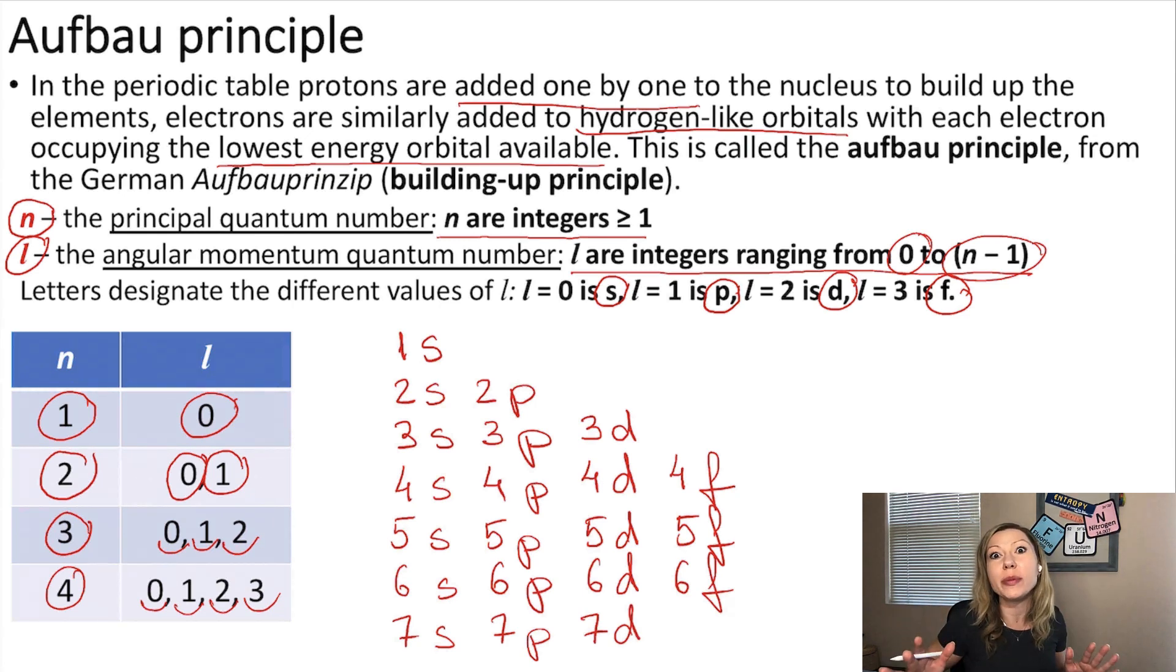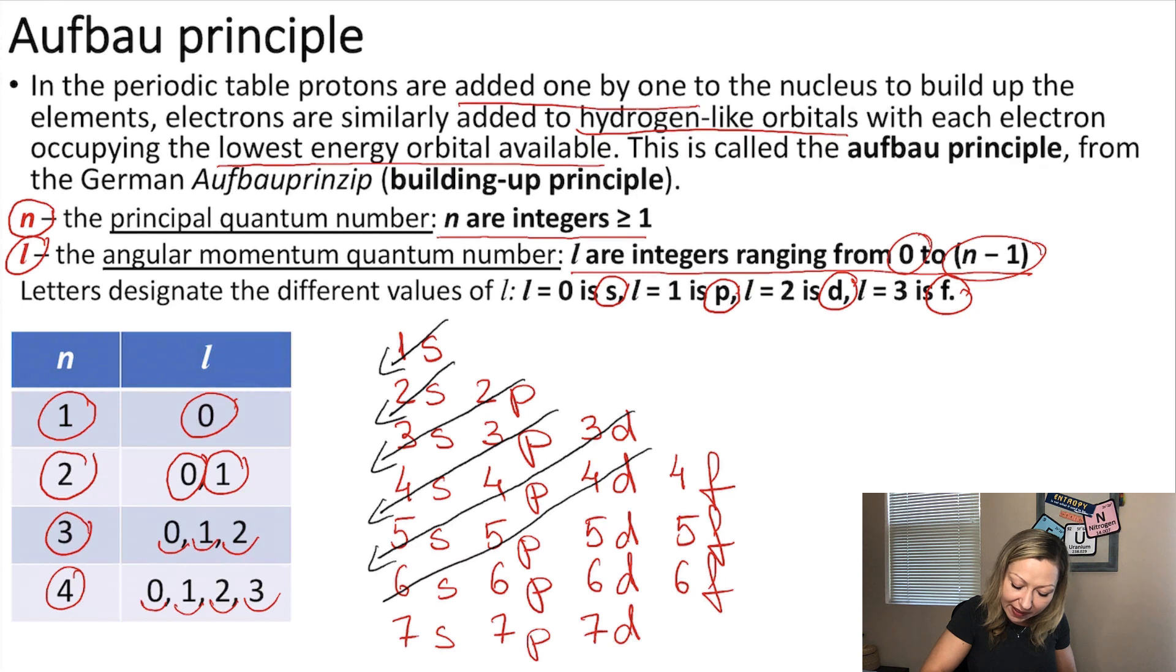How do I fill up these orbitals? I just have to follow the arrows. I start with the 1s orbital, that is the lowest energy one. Then 2s, then 2p, 3s, 3p, 4s, 3d, 4p, 5s, 4d, 5p, 6s, 4f, 5d, 6p, 7s, 5f, 6d, 7p. So this is the exact order on how to fill up our orbitals.